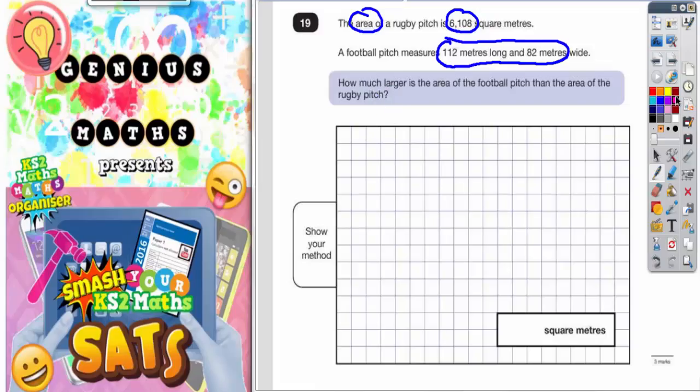Well, the football pitch is a rectangle, and as we know, a rectangle has an area of length times width. So we've got to do 112 times 82 to get the area of the rectangle.